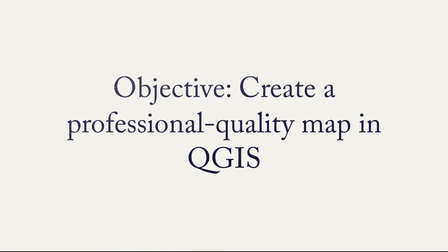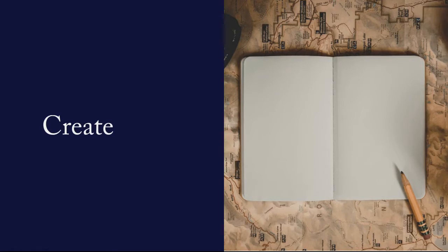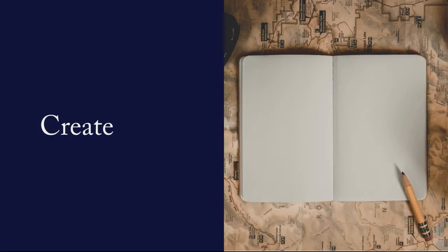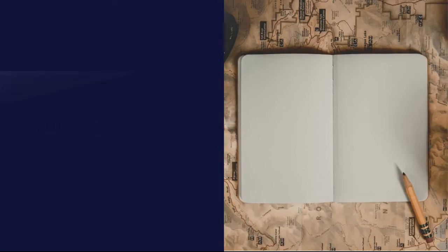Let's break this down a little bit. The first part of the objective — create — is where a lot of the hard work happens. You'll be coming up with a story or theme that you want to illustrate in a map, finding your data, and preparing that data.